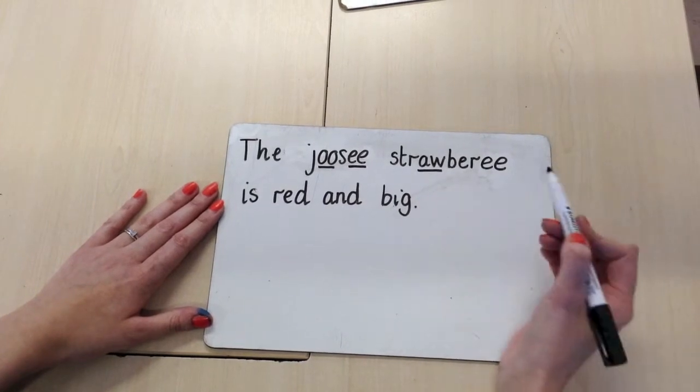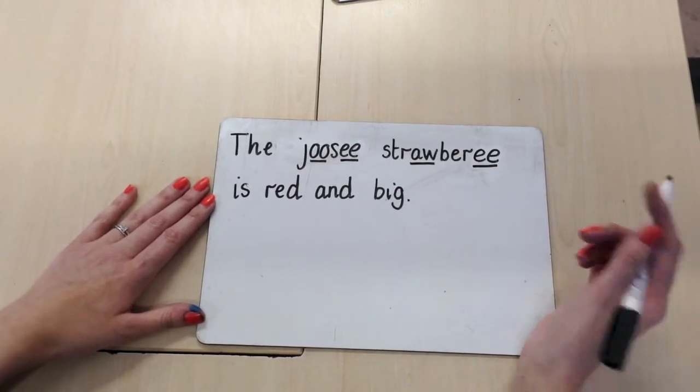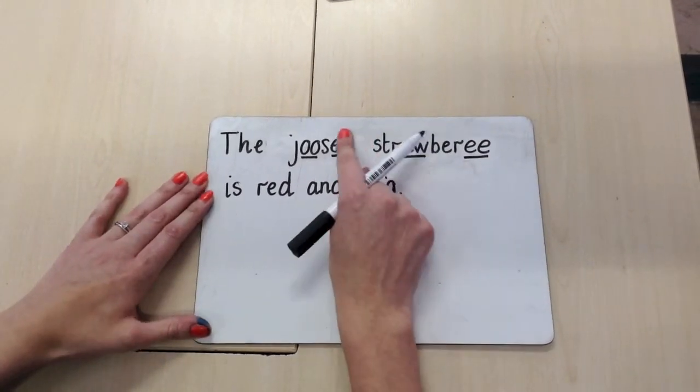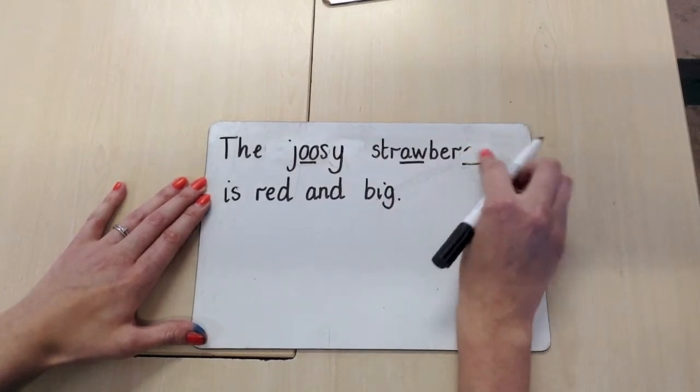And the E-digraph at the end. Just like before, I said that if you can hear E at the end of a word, it's normally what we say a cheeky Y. And you could encourage your child to change that.